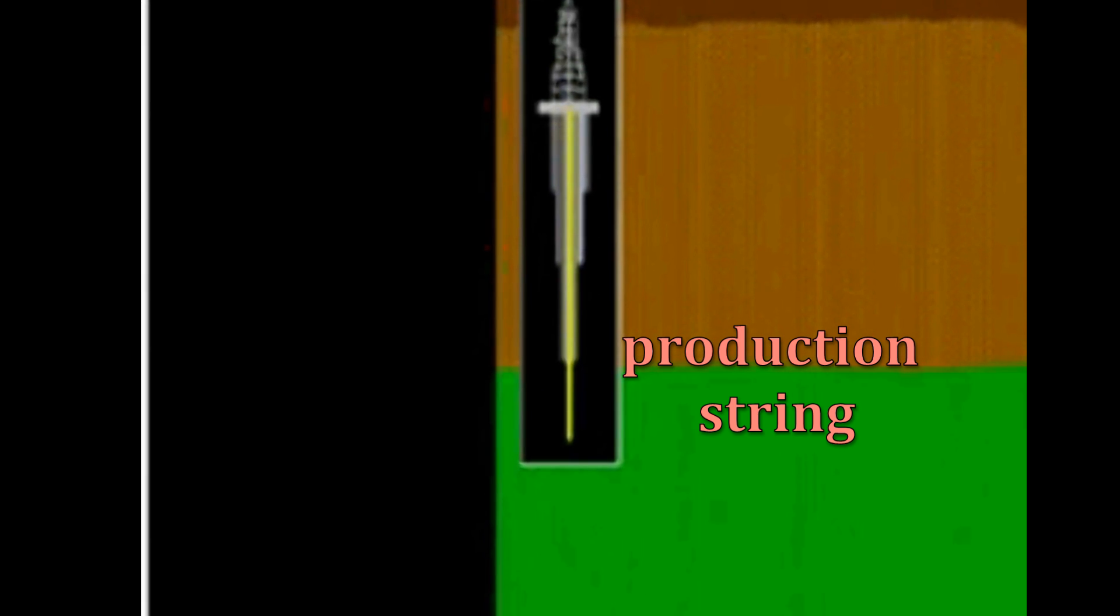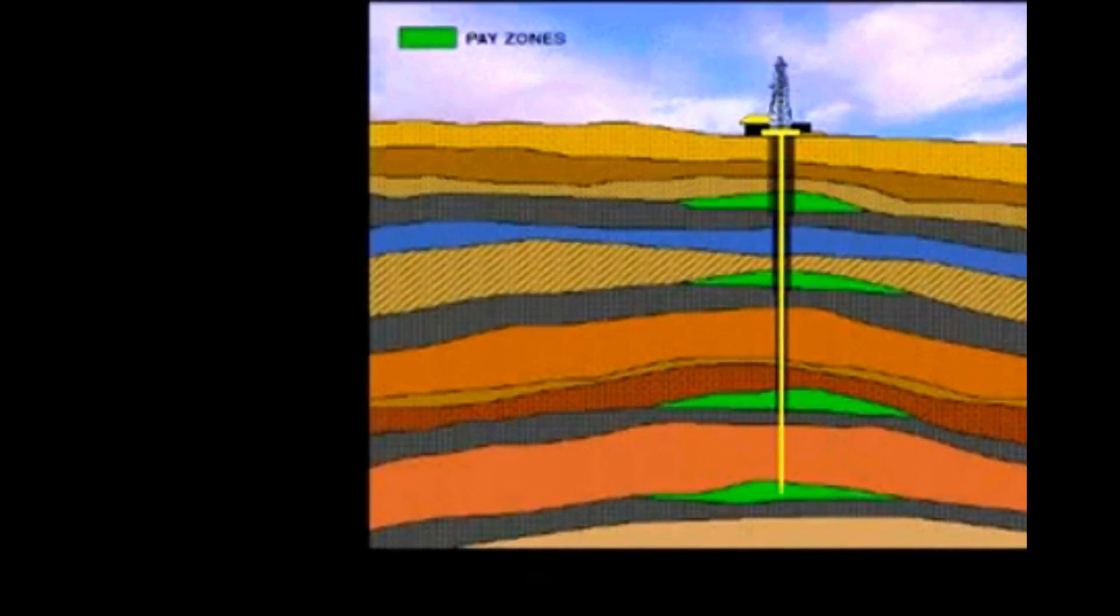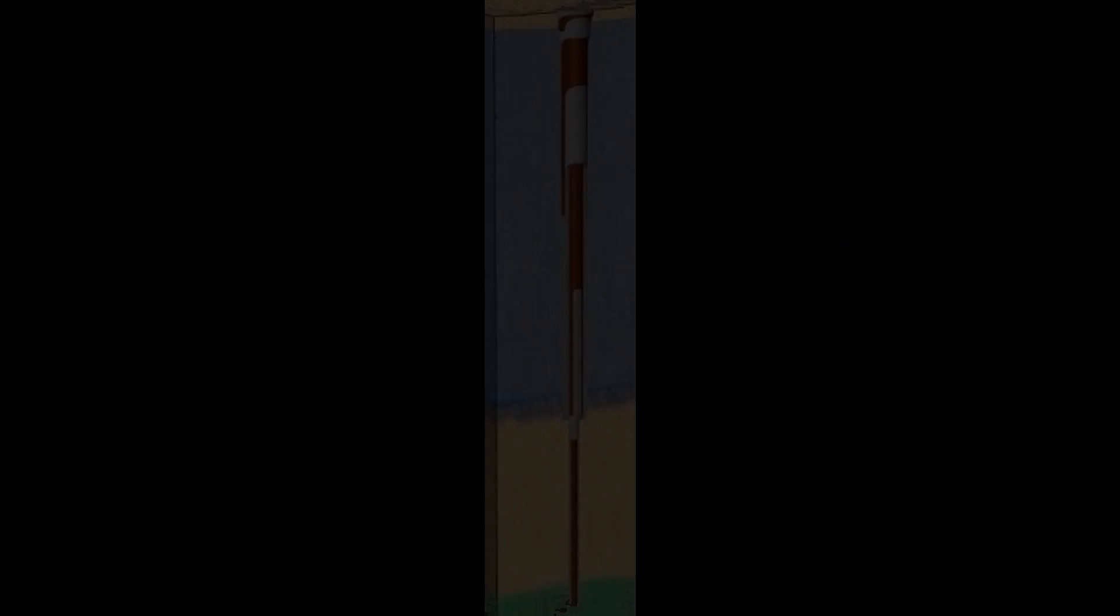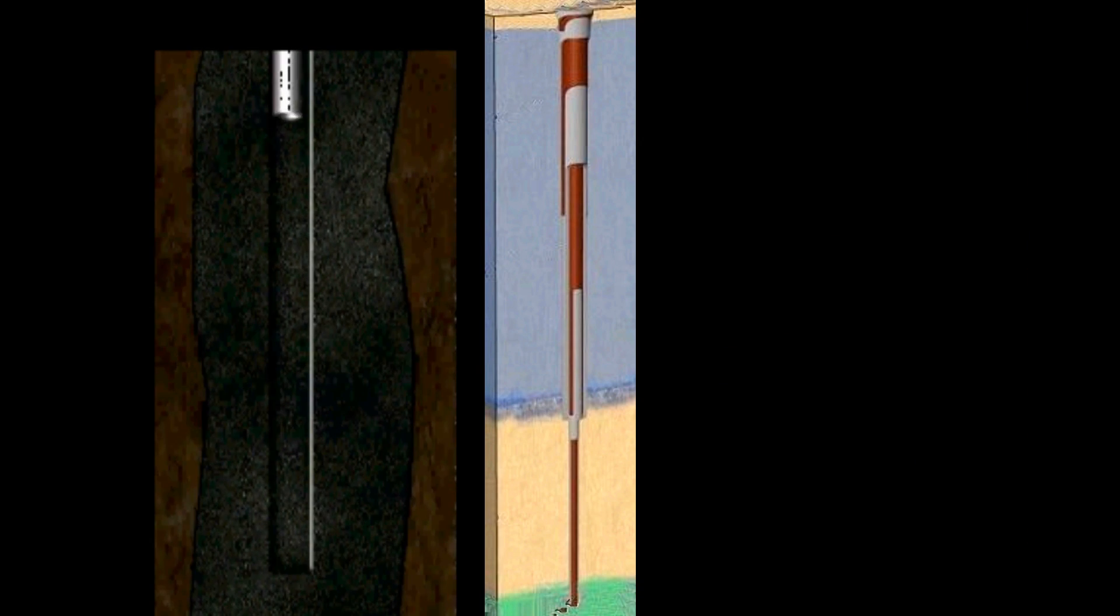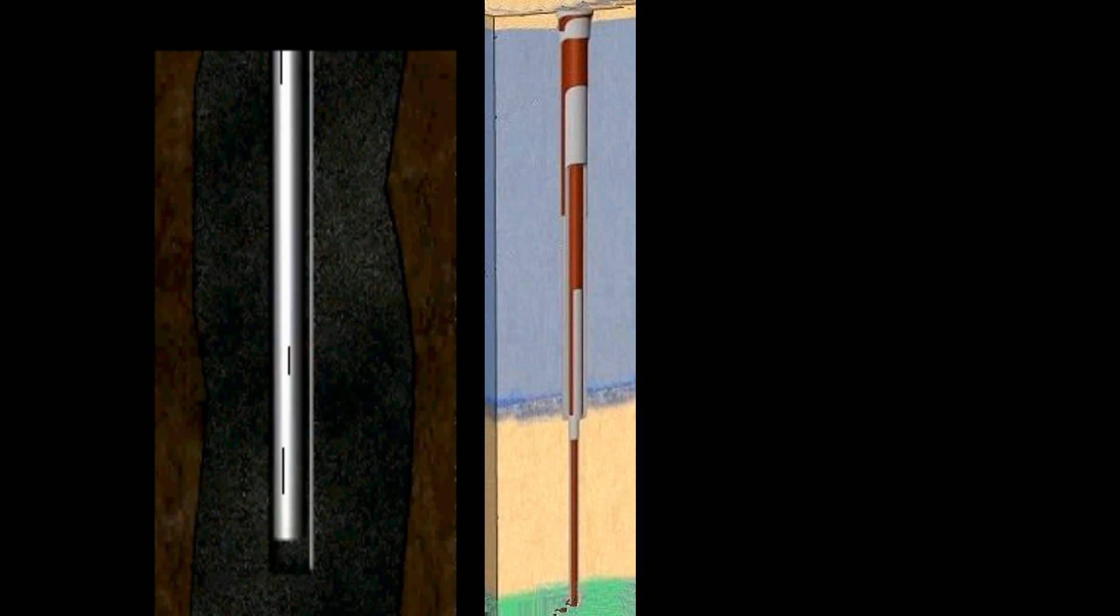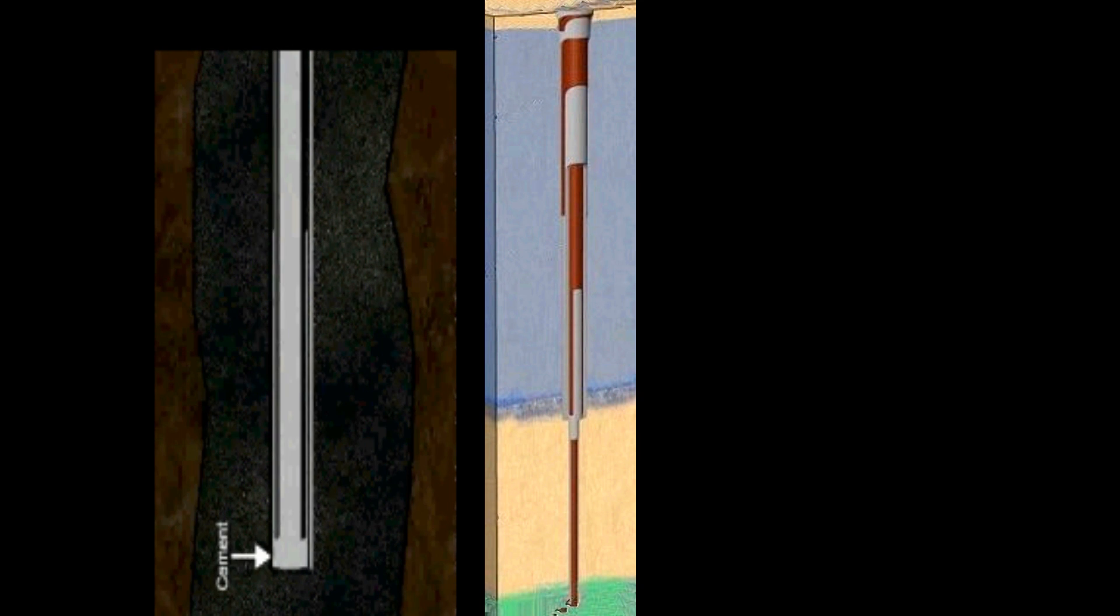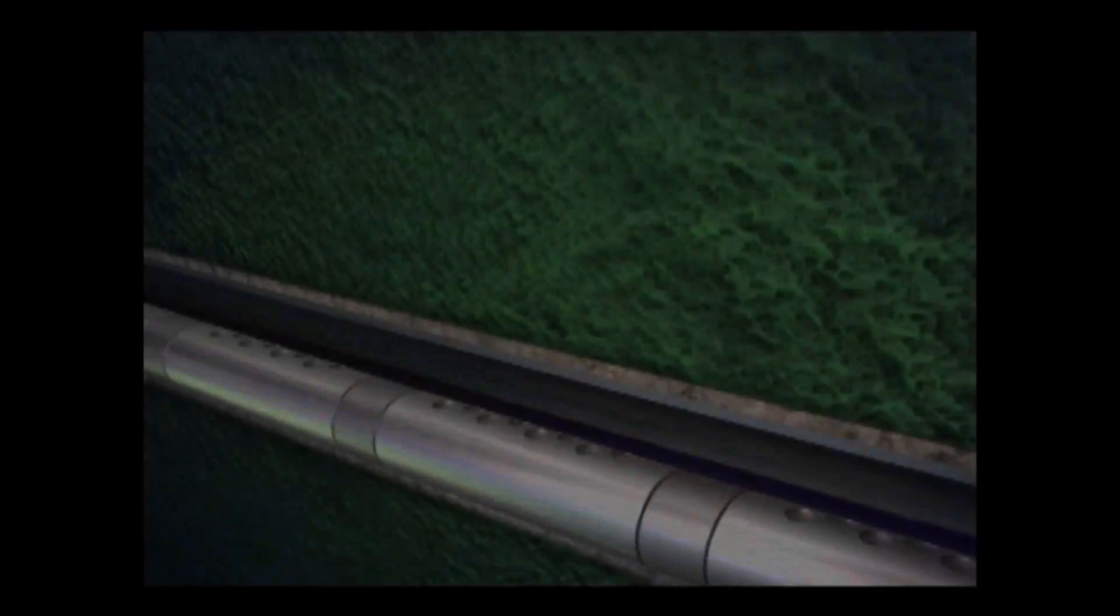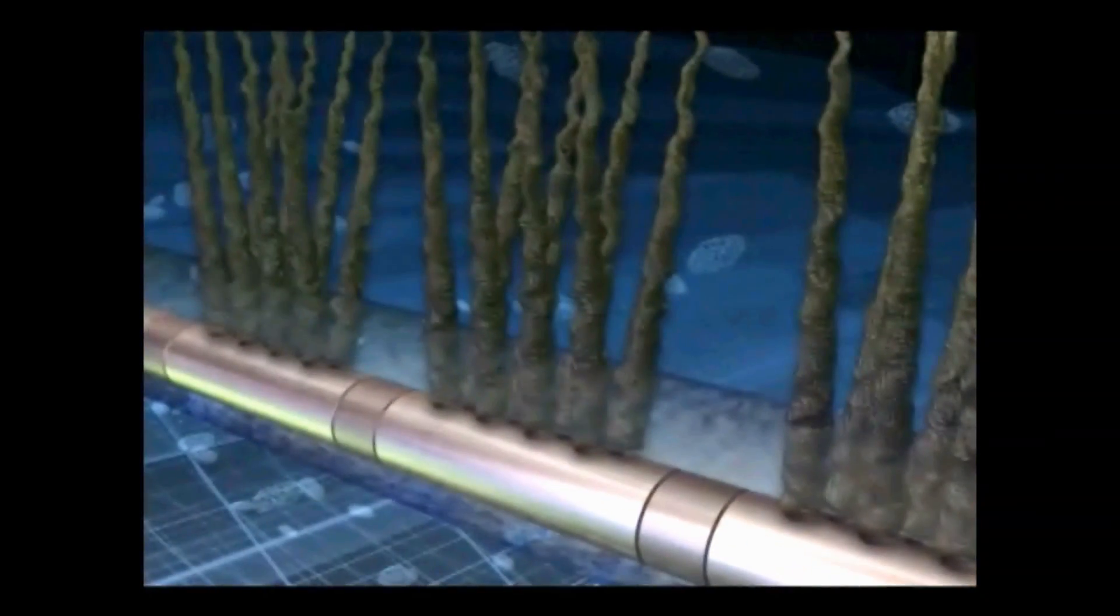Called production casing, long string or oil string, this string is set through the producing zone and cemented, ensuring that it is tied to the string above so that there is a continuous sheath of pipe and cement from bottom to top. Later, this casing and cement will be perforated to get access to the producing zone.